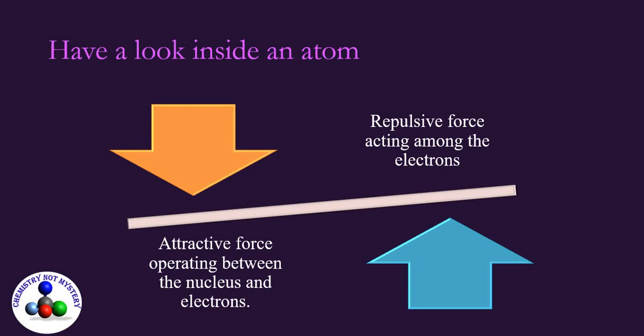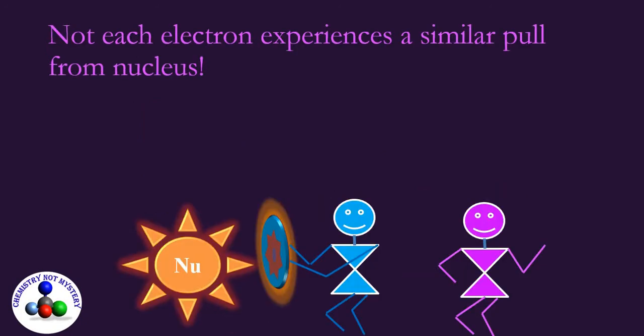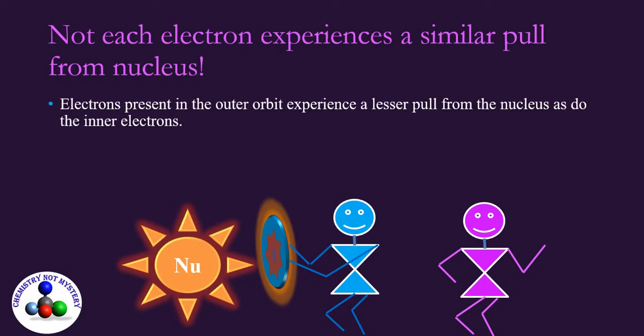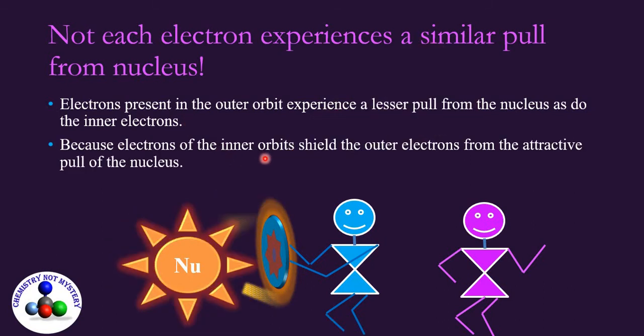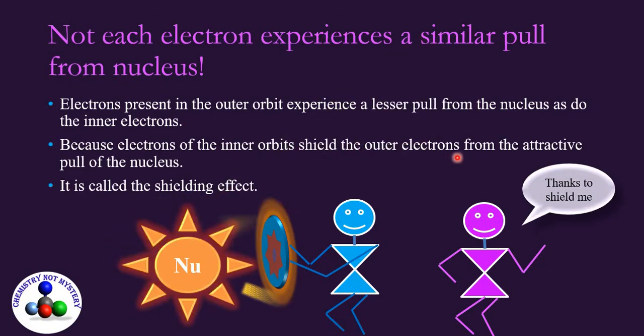But each electron does not experience a similar pull from the nucleus. Electrons present in the outer orbit experience lesser pull from the nucleus as compared to the inner electrons. Because they are present at a distance from the nucleus and electrons of inner orbits shield the outer electrons from the attractive pull of the nucleus. It is called the shielding effect.